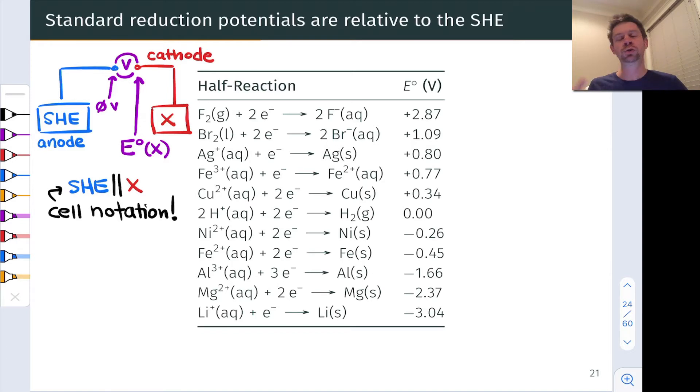We can arrange this setup for a huge variety of half cells X to get standard reduction potentials for a wide variety of reduction half reactions. Some of these will be positive in cases when the oxidation of H2 is capable of powering that reduction reaction spontaneously, and some will be negative in cases when the half cell X actually delivers electrons to reduce protons to H2 spontaneously.